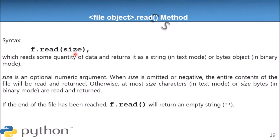If your file pointer is at the last position of the file - that is, it has reached the end of the file - and you apply f.read(), it will return an empty string. That means the file pointer has reached end of file and there is no more content ahead, so it returns an empty string and displays a blank space on your screen. These are the three key points you should know about the read method.